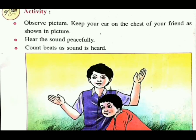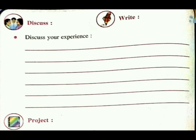Hear the sound peacefully — आप उसे एकदम शांति से, उसे आवाज सुन सकते हो, टिक टिक टिक. Next, count the beats — sound is heard. जैसे कि शांति से, यानी sound को शांति से सुनो, और उसे धड़कन — आप जो heartbeats सुनो, okay students. Discuss your experience — जैसे आपको मैंने बताया कि आपको experience लेना है, अपने friend के chest पे हाथ रखके कितने heartbeats हो रहे हैं, count करके यहाँ पे discuss करके लिखना है.